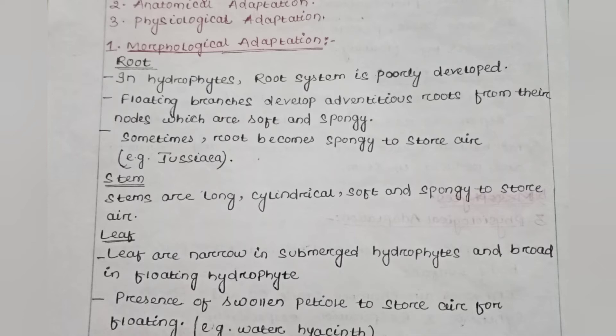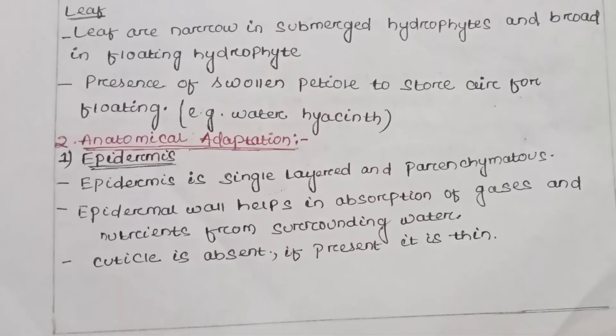The leaves are narrow in submerged hydrophytes, such as Hydrilla, and broad in floating hydrophytes, such as water hyacinth. Water hyacinth floats on the water surface and has a swollen petiole to store air, which helps in floating. The scientific name of water hyacinth is Eichhornia.